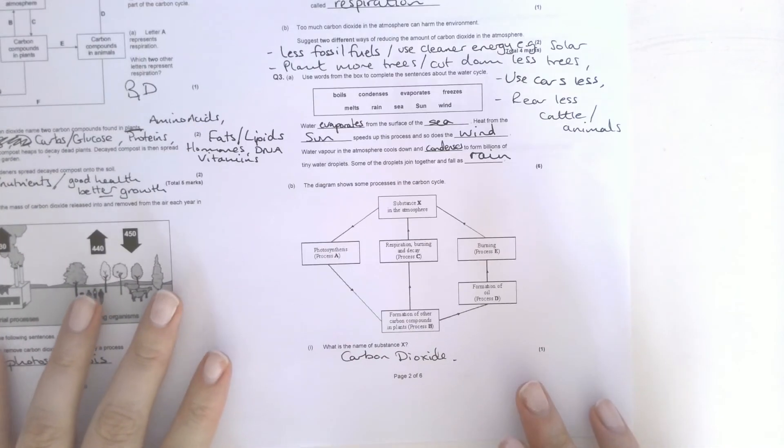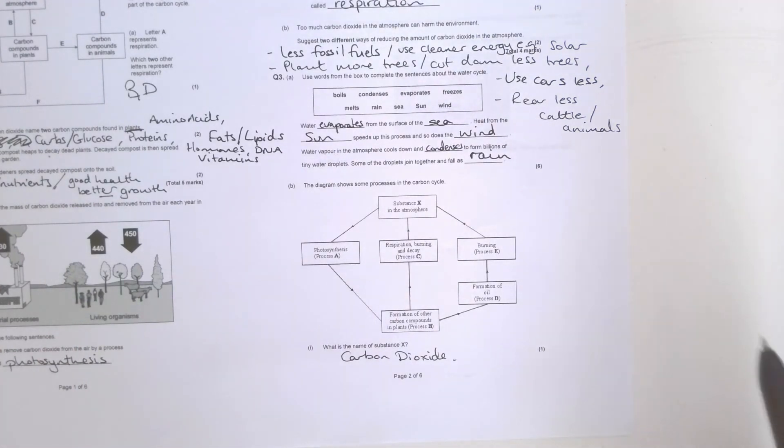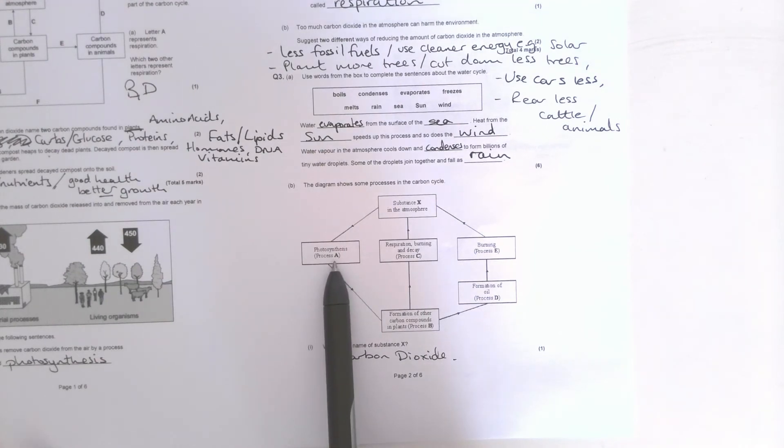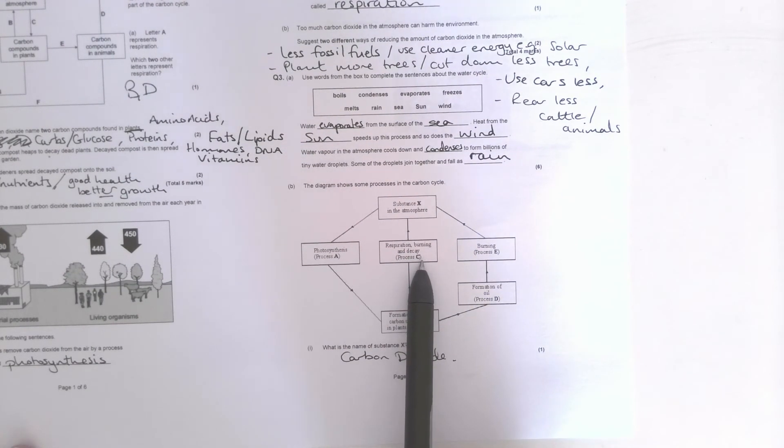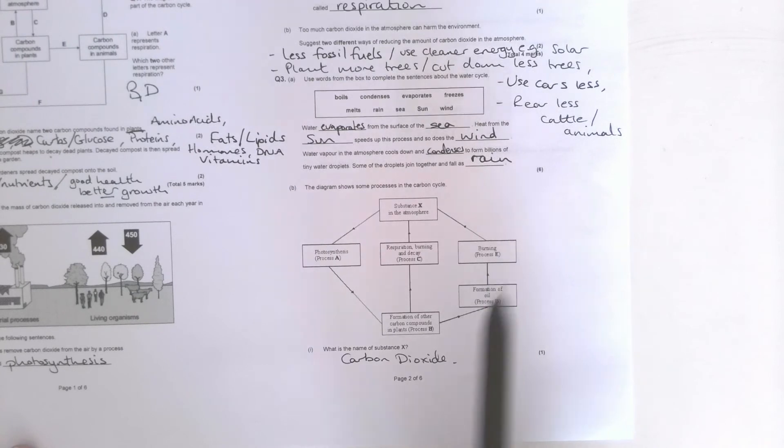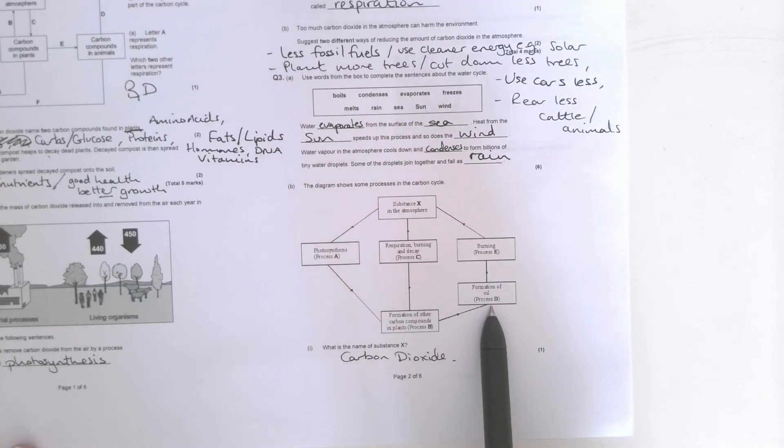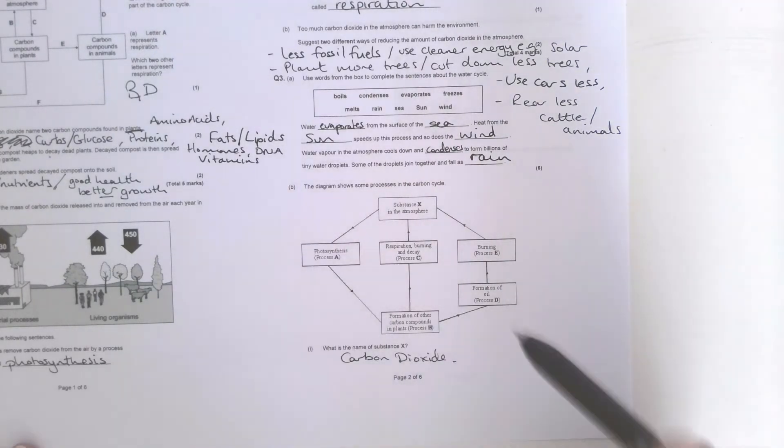If we go back here, we've got one, two, three, four, five different processes. We've got photosynthesis, respiration, burning, decay, burning, formation of other carbon compounds in plants, and formation of oil. The thing that takes the longest here is making oil.